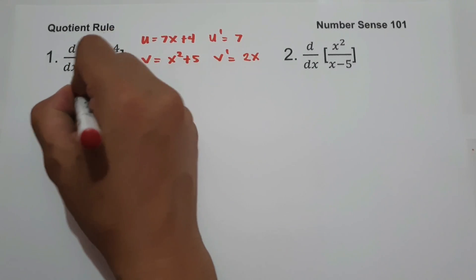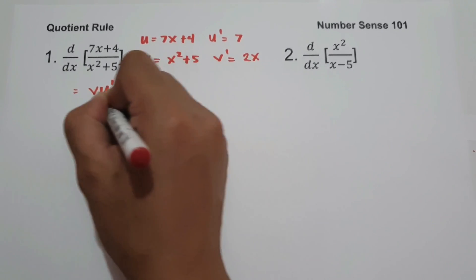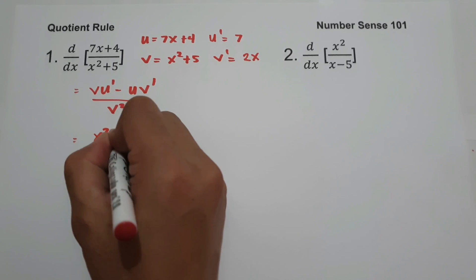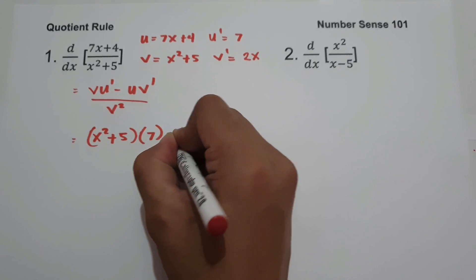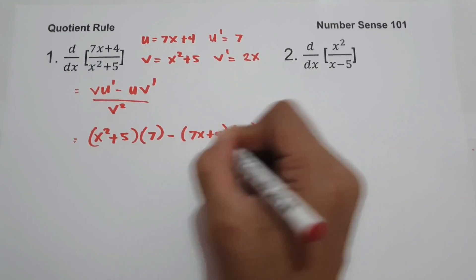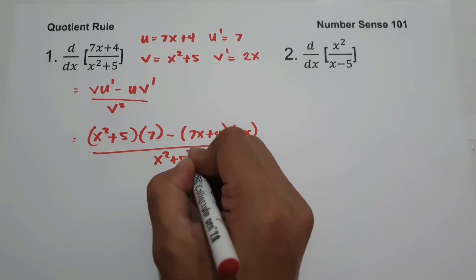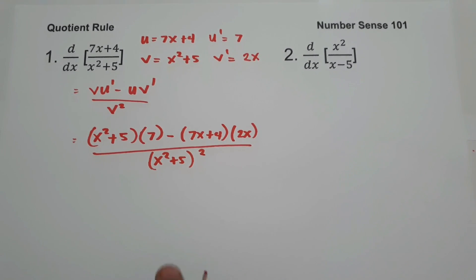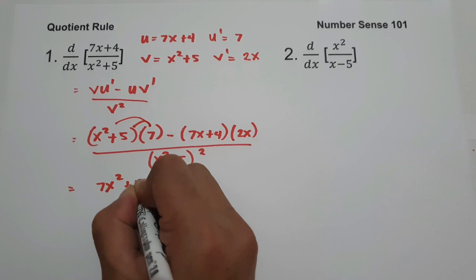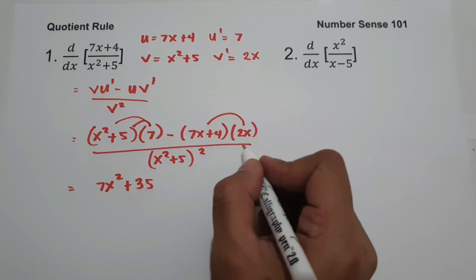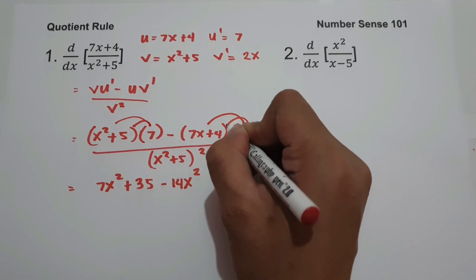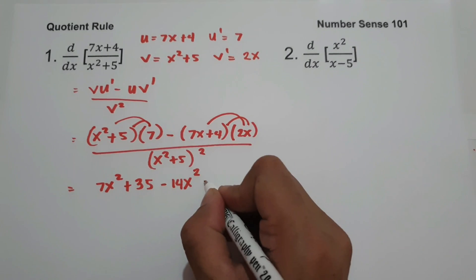Now let us apply the formula: v·u' minus u·v', all over v squared. Substituting the values: (x² + 5)·7 minus (7x + 4)·2x, all over (x² + 5) squared. Simplifying: 7 times x² is 7x², and 7 times 5 is 35. Then 2x times 7x is 14x², which becomes negative 14x². And 2x times 4 is 8x, which becomes negative 8x.